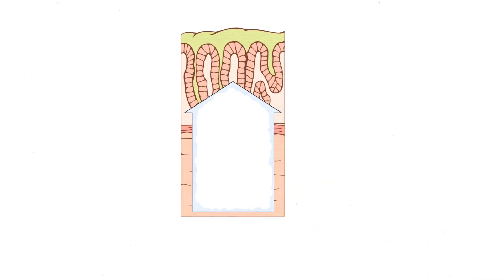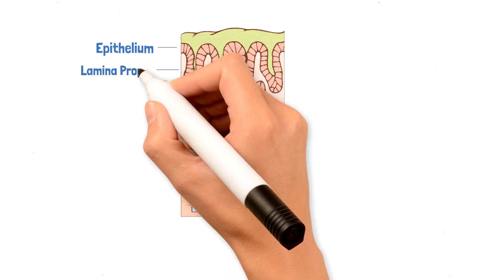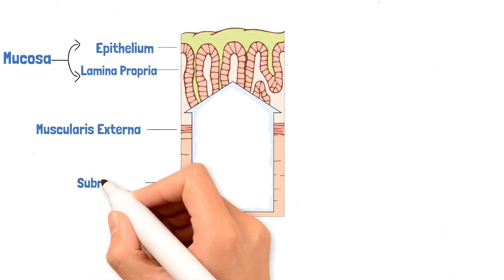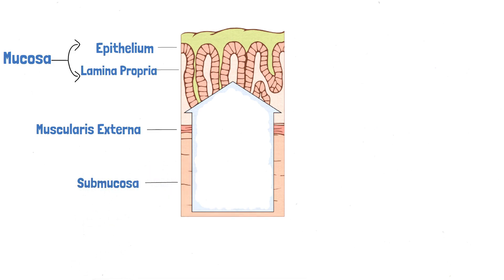Let's talk about the histology of the stomach layers. Firstly, we have a layer of epithelium which lines the gastric mucosa. Below that is the lamina propria. The lamina propria and the epithelium combined are called the mucosa. Below the mucosa we have the muscularis mucosa, which is the layer of muscles. Finally, below the muscularis we have the submucosa, which is basically the connective tissue holding everything together.